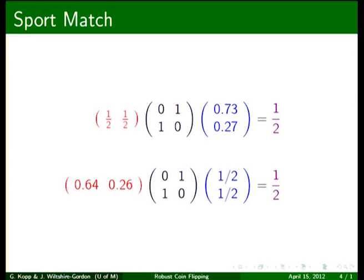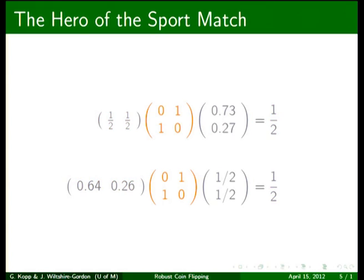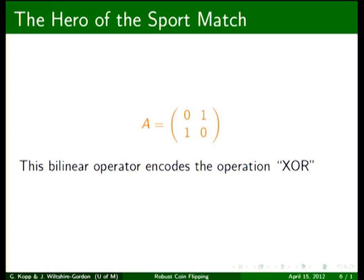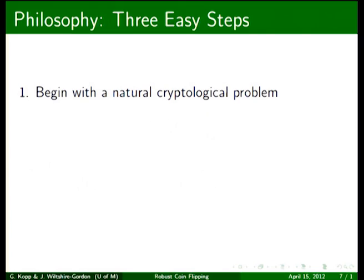These are the same two equations, but I've written them with matrices, because that's the notation that we're going to use to generalize this. So the real important operator here is this middle matrix, which we're going to call A. This matrix represents XOR. And the idea is that once you think of using XOR to solve the problem, you have found a robust scheme.